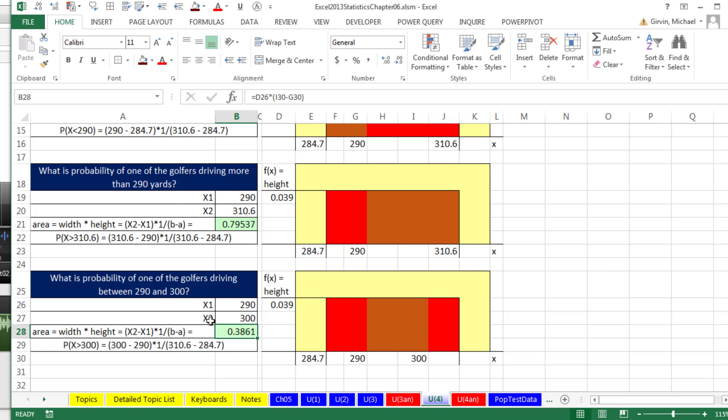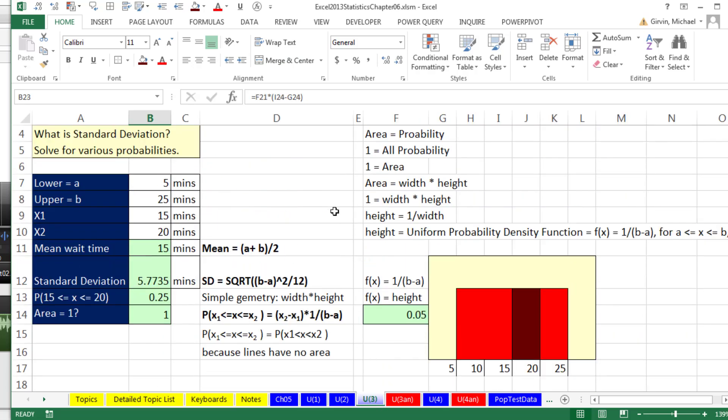So uniform probability distribution. We saw a golf example. We saw a service time waiting on the phone example. And most importantly, we talked about the fact that it's all about geometry. Draw those pictures. Next video, we'll talk about the normal bell-shaped distribution. See you next video.